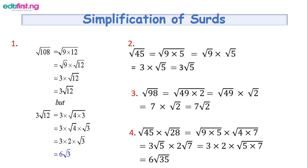The fourth example combines two surds: root 45 times root 28. Find factor pairs — 9 times 5 for 45 and 4 times 7 for 28. So we get root 9 times root 5 times root 4 times root 7, giving 3 root 5 times 2 root 7. Multiply the numbers outside: 3 times 2 is 6. Multiply the roots inside: root 5 times root 7 is root 35. The answer is 6 root 35.